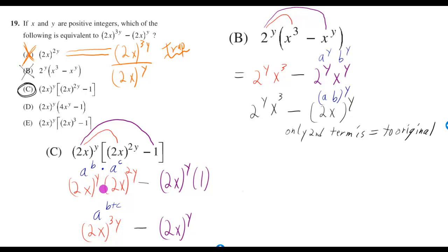And that gives you 2x to the y plus 2y, which is 2x to the 3y. And then if you follow the purple line, you have 2x to the y times 1, well that's just 2x to the y. And that does give us what we want.